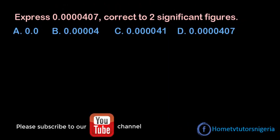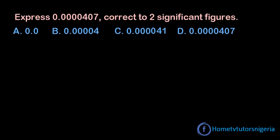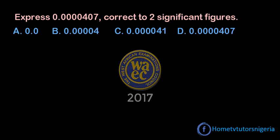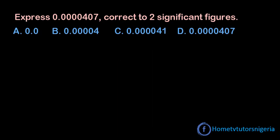Hi there, you are welcome. I am Oluwakemi. In this video we are going to take a look at Question 1 of the WIAC 2017 Mad Miles. The question goes: Express this given decimal number correct to two significant figures.